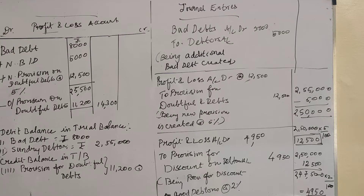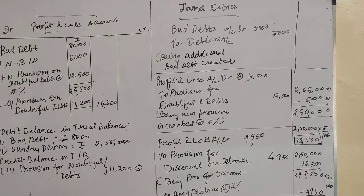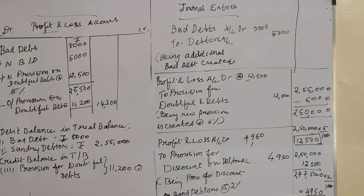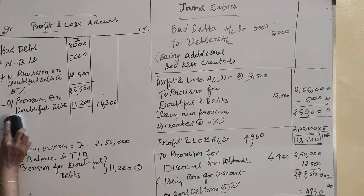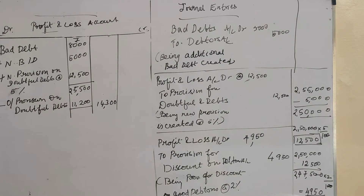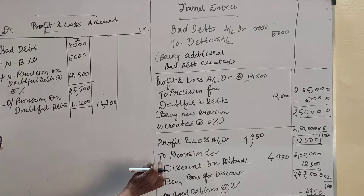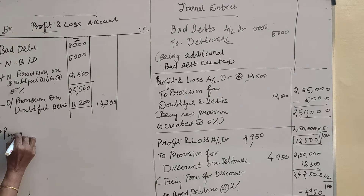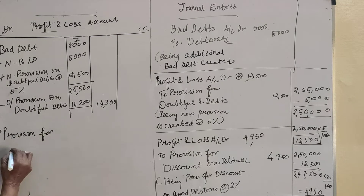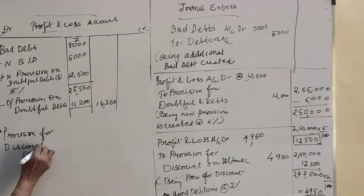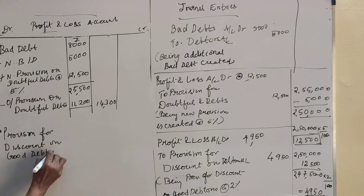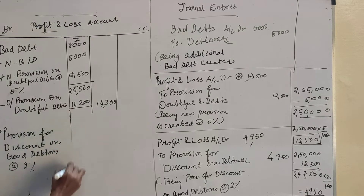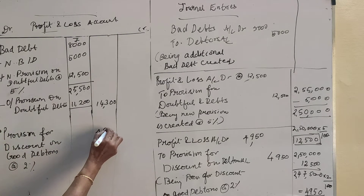Next, we are going to write down the provision for the next item: provision for discount on good debtors at 2 percentage. How much is given? Straight away, you can take it to the main column: 4,950.